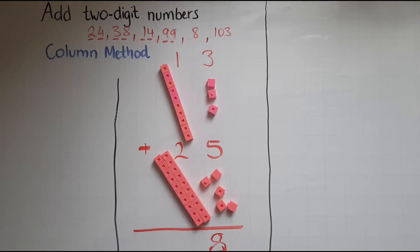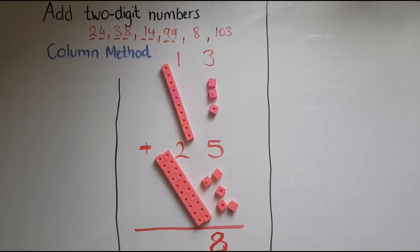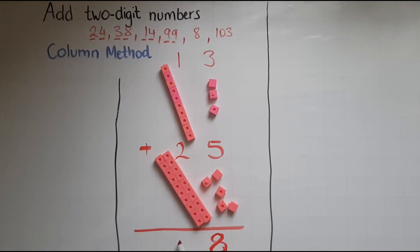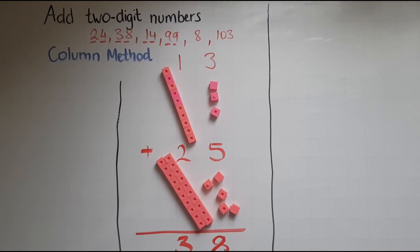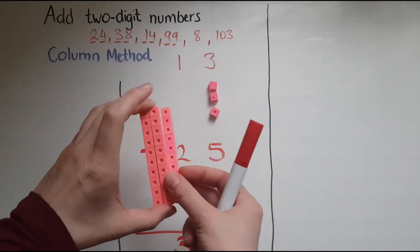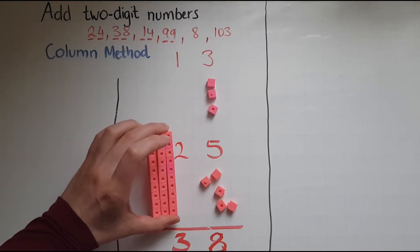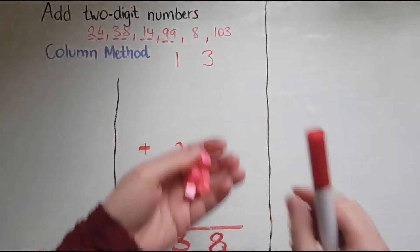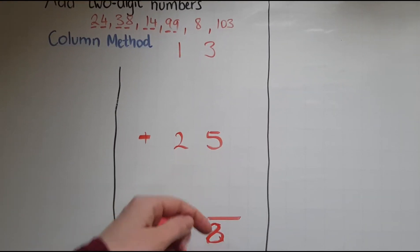So the units make 8, and when it comes to the tens I've got one block and another 2, so that's 3 blocks of 10. So the answer is 38. All together this is 38, which is represented by the 3 blocks of 10. So this 3 is represented by the 3 blocks of 10 and these 8 here, the units.